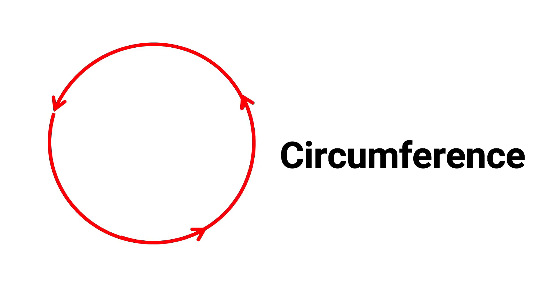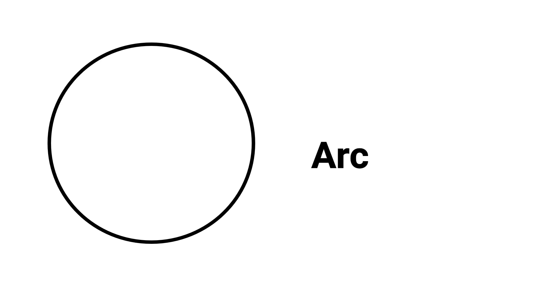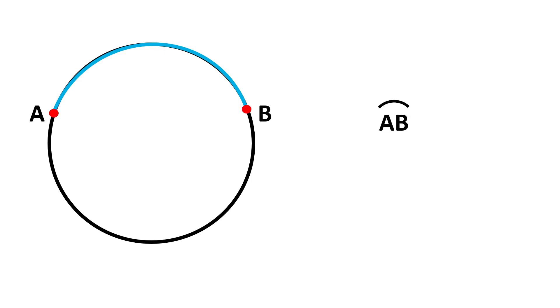Circumference is the length of the curved line that forms the circle. An arc is the part of a circle between any two points on the circle. If we wanted to describe this arc that starts at point A and ends at point B, then this symbol is written above the letters and means arc.